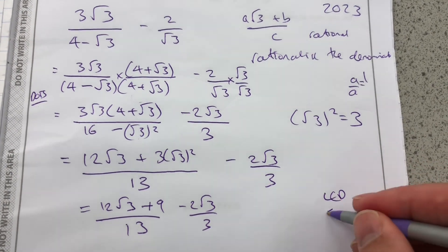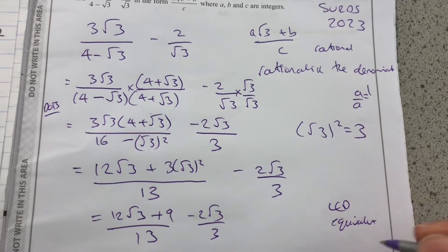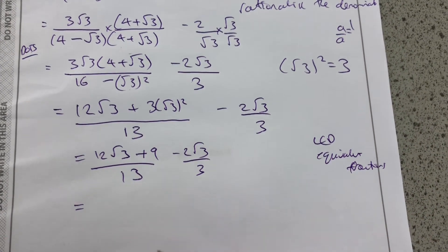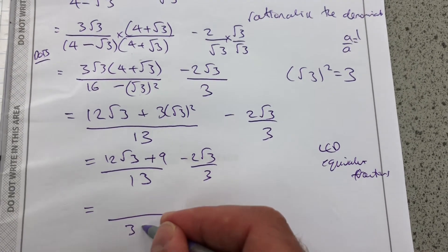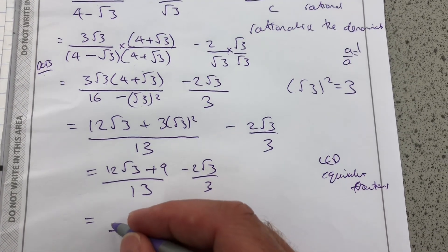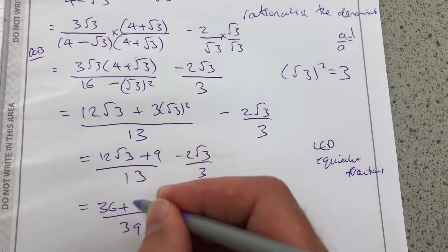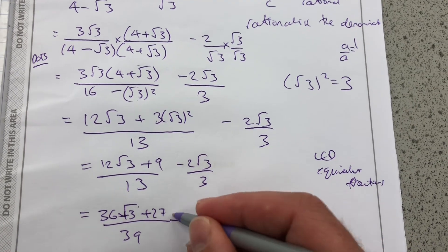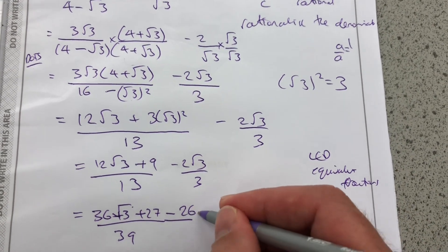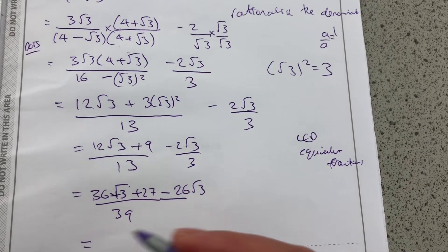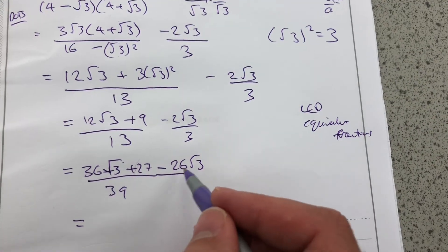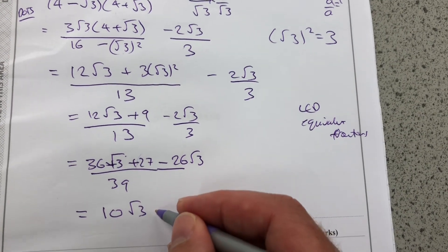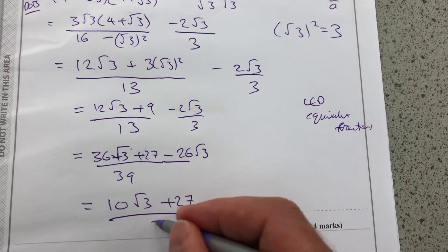I need a lowest common denominator to find equivalent fractions. This is where our earlier work on fractions is useful. The lowest common denominator is going to be 39. So I've multiplied this by 3. I'm going to have 36 root 3 plus 27 minus this times by 13 now, which is 26 root 3. That 27 is going to stay the same, but 36 minus 26 is going to be 10 root 3 plus 27 all over 39.